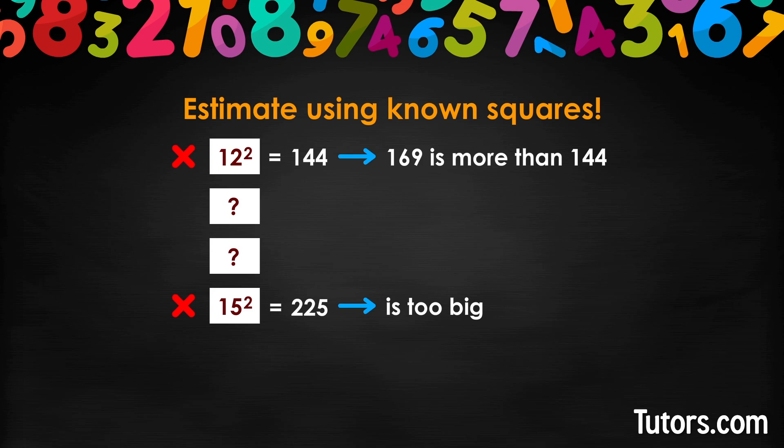Try the two remaining whole numbers. 14 squared equals 196, so we know it is now between 12 and 14. That leaves 13. 13 squared equals 169.